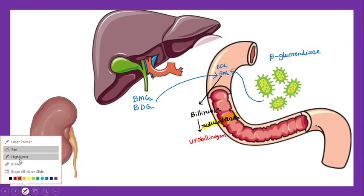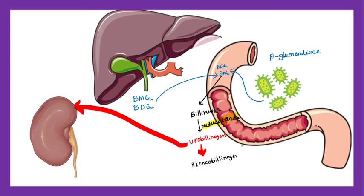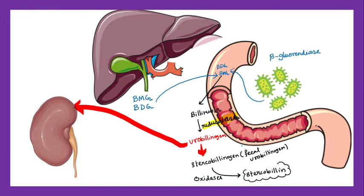Some of this urobilinogen is absorbed into the systemic circulation and goes to the kidney. The urobilinogen remaining in the gut is known as stercobilinogen — this is nothing but the fecal urobilinogen. This fecal urobilinogen, also known as stercobilinogen, is acted upon by certain bacterial oxidases to form stercobilin, which is excreted with the feces through the anus.